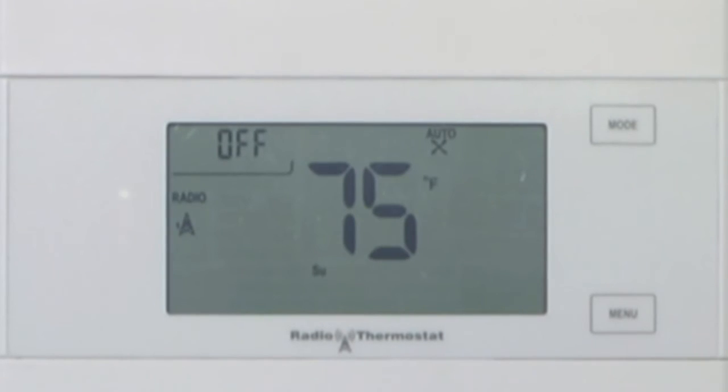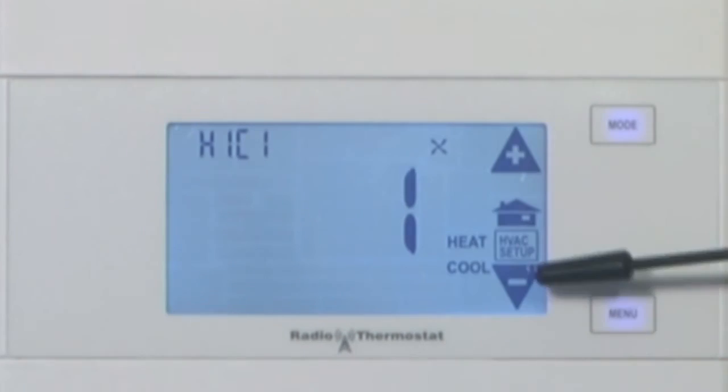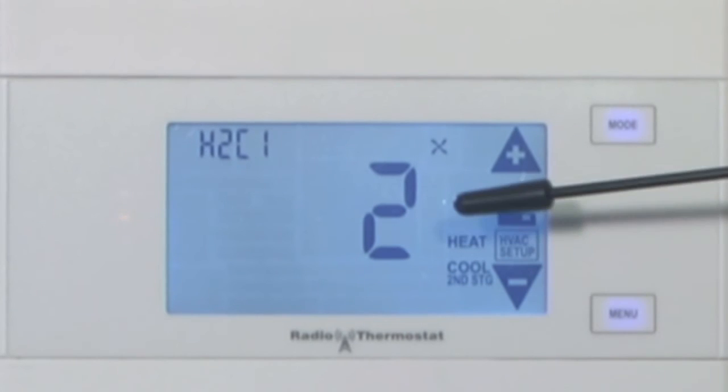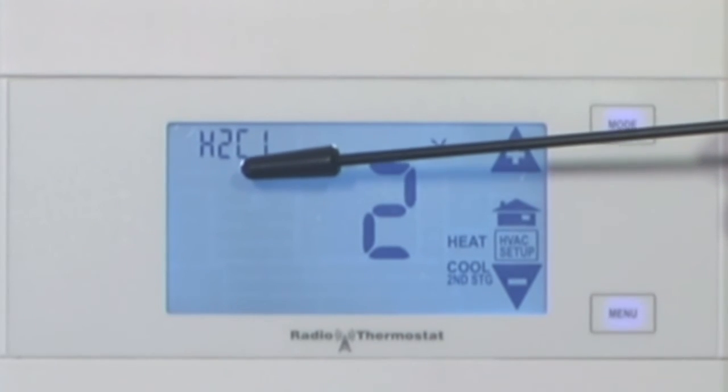So what do we do if we have more than one stage of heat or cool? Simply press the up and down arrow, and if you go to number two, you'll notice it says two stages of heat, one stage of cool.